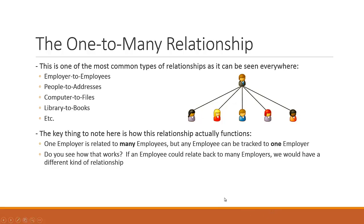But if you were to take a sampling of one of those employees, that person can only be tracked back to one employer. This is a key concept: if an employee could relate back to many employers, we would have a different kind of relationship. But because each employee points back to just one employer, that's exactly the one-to-many relationship we have.